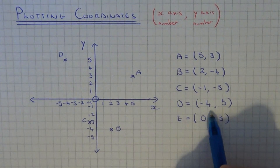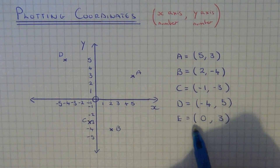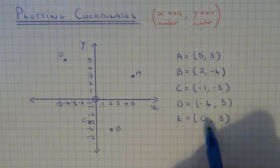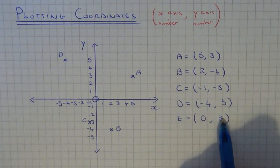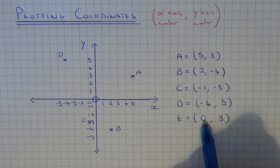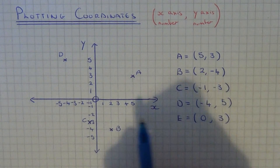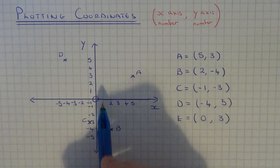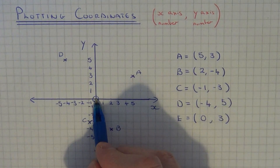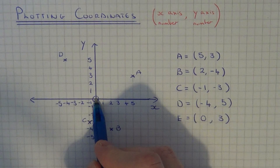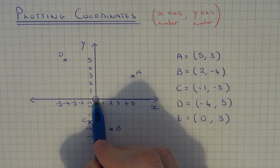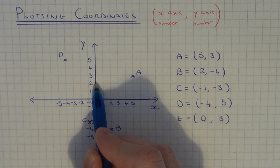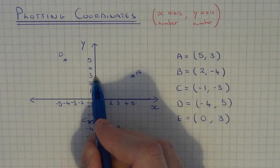So our final one is a little bit harder to do. You have to be careful with coordinates with zero in. So this time the x-axis number is zero, so we look for zero along the x-axis — well, it's right at the centre there. The y-axis number is plus three, so that means we need to go three up — one, two, three.